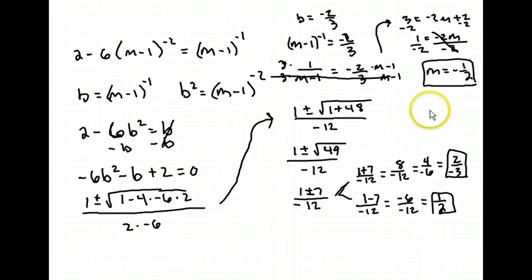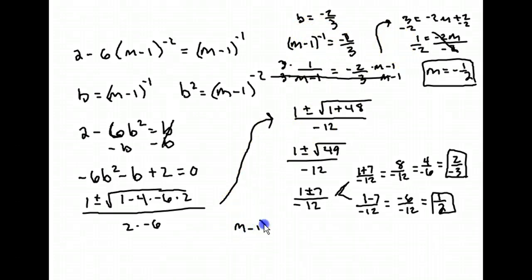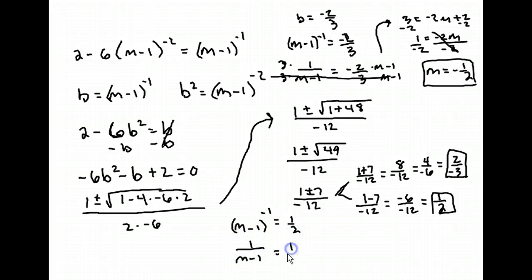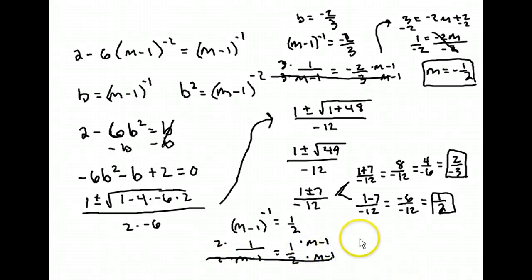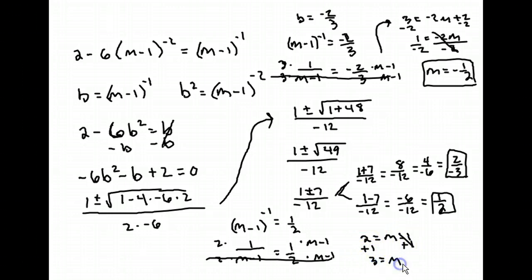That's one answer. You also have (m minus 1) to the negative 1 equals positive 1/2, which is 1 over (m minus 1) equals 1 over 2. Multiply top and bottom accordingly — the denominators cancel and you end up with 2 equals m minus 1. Adding 1 to both sides gives 3 equals m. So your two final answers are m equals 3 and m equals negative 1/2.